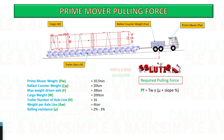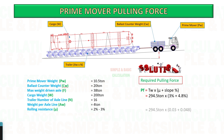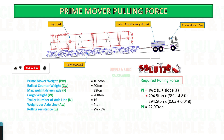After getting the total weight, start to calculate the required pulling force by adding the rolling resistance percent and slope percent, then multiply it by the total weight. The pulling force required is 22.97 tons.